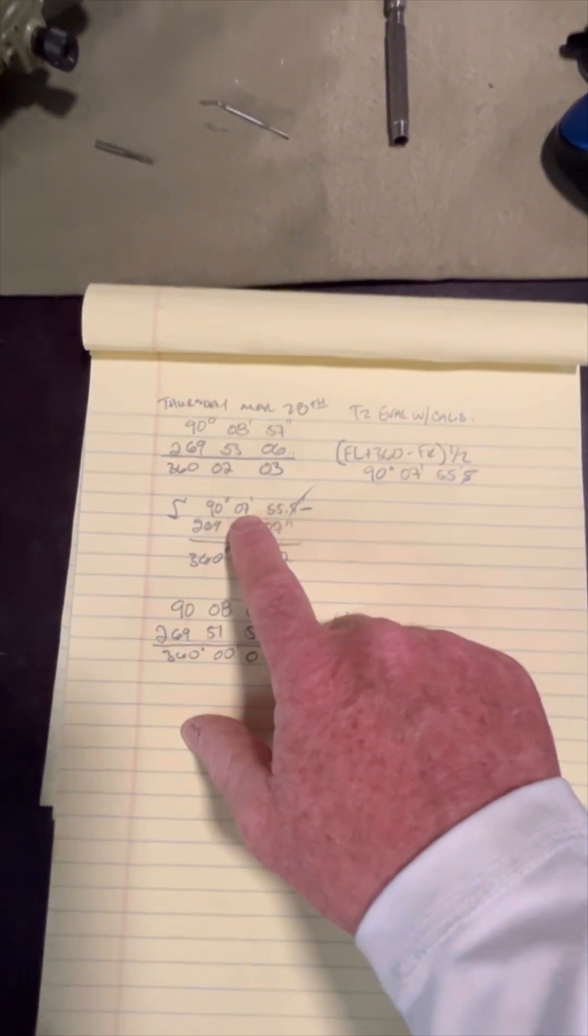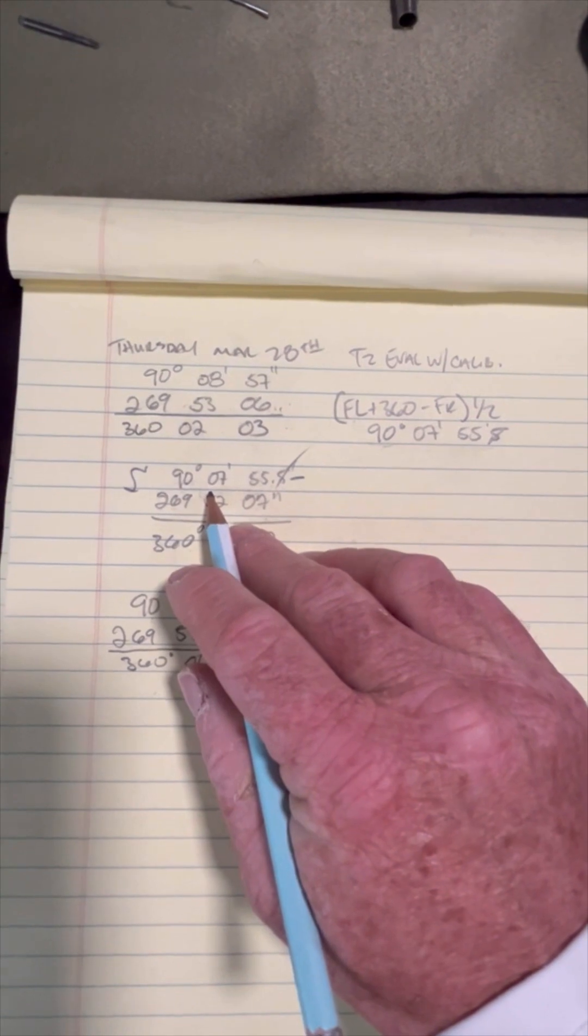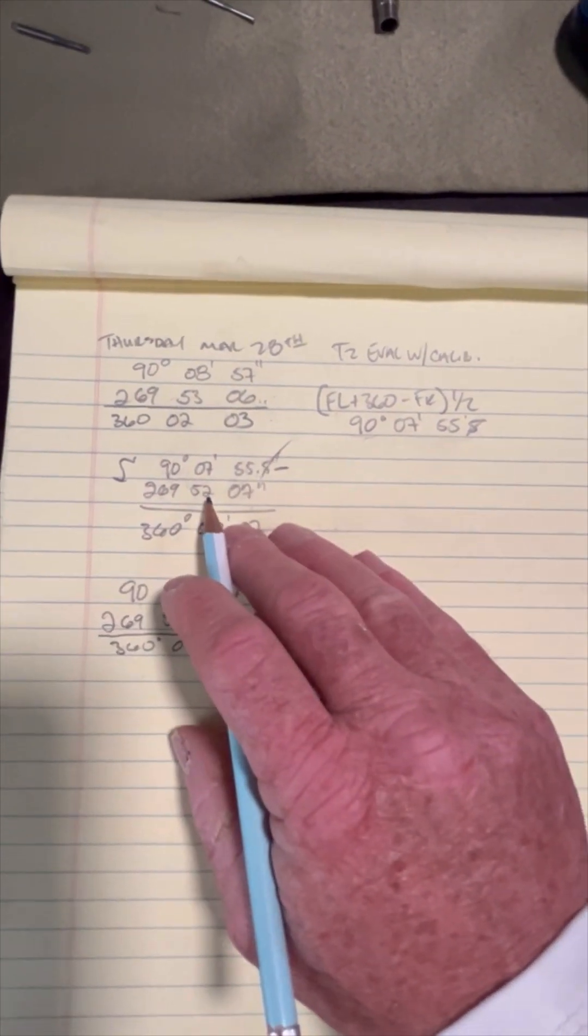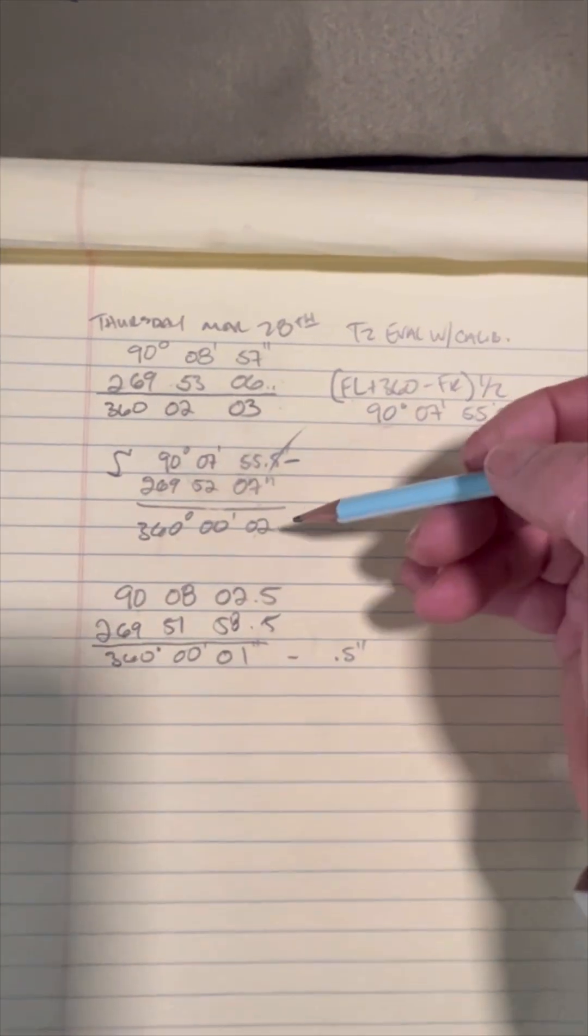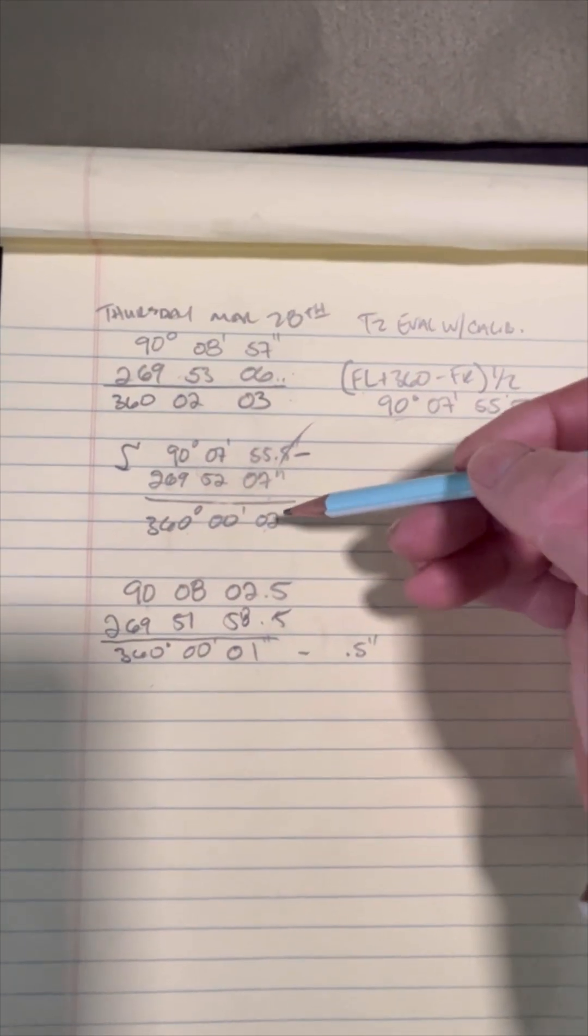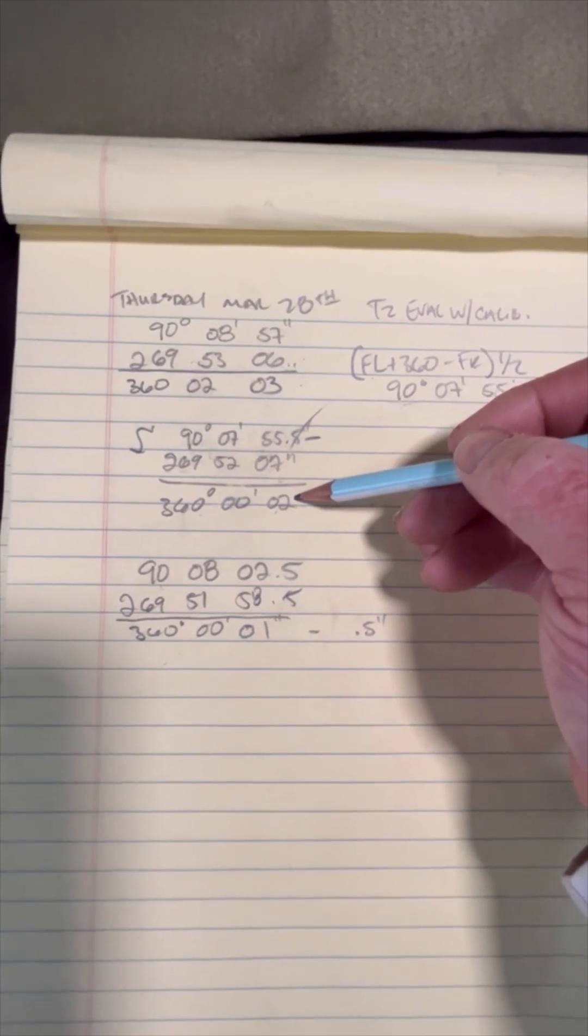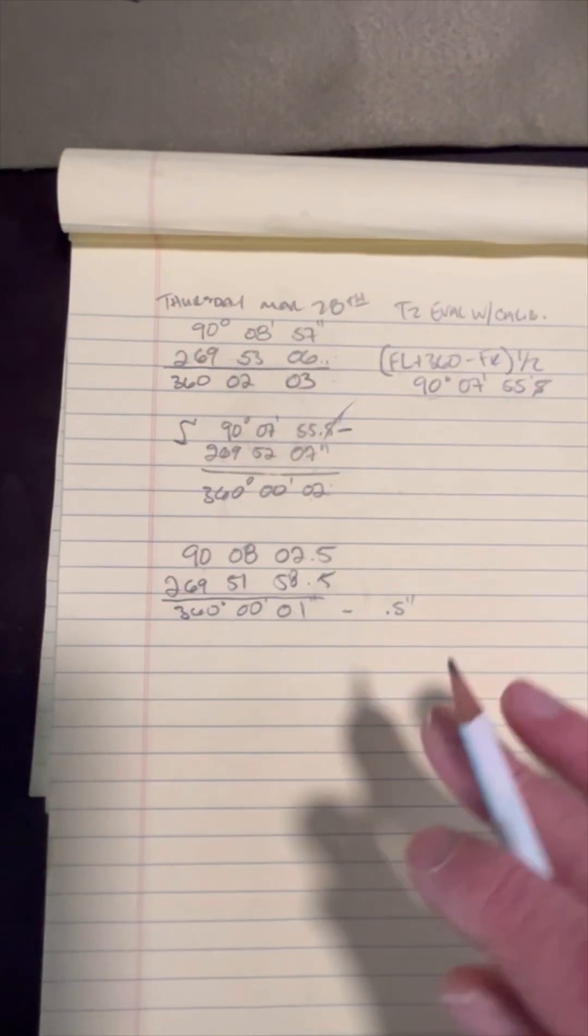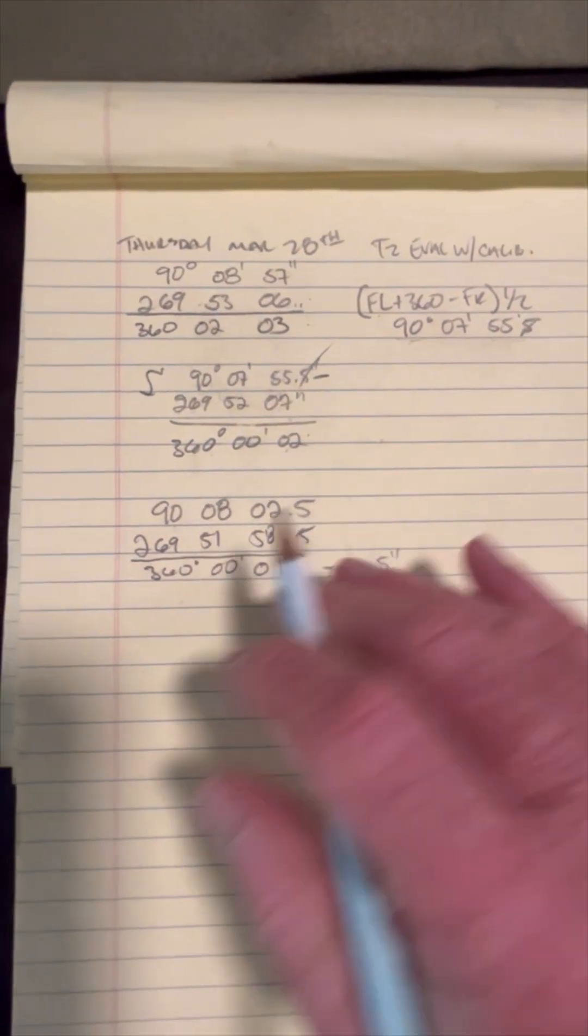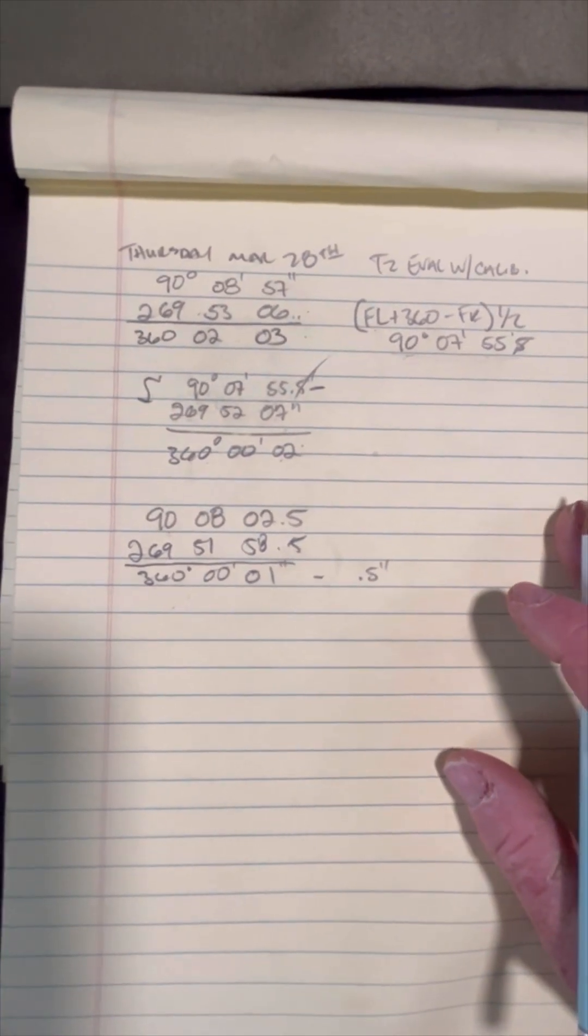So now I'm in the face left position and I've got the instrument set. So I immediately turn it in face right and I take another measurement. And this was the error that I came up with. And so what I wanted to do was I wanted to make sure that calibration went as I thought it had gone. And so I ran another test altogether and I wound up with half an arc second of error.